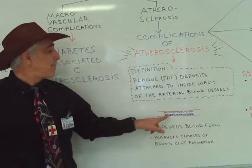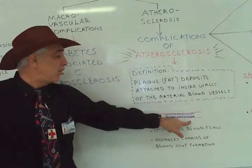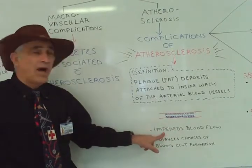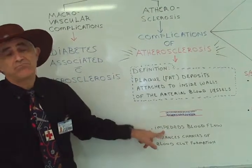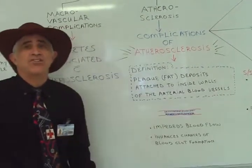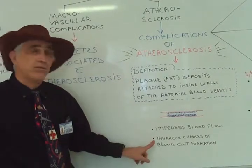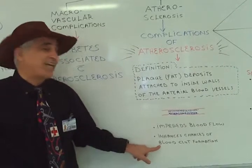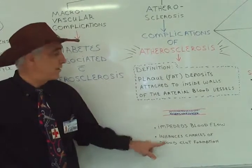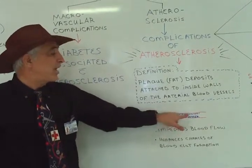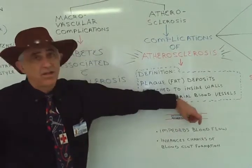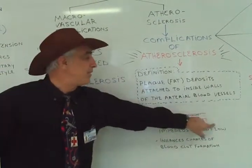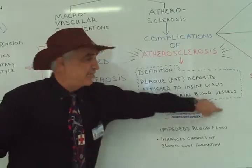Two important problems that occur as a result of atherosclerosis are: one, impeded blood flow — the blood is not making it the way it should; and two, atherosclerosis enhances the chances of a blood clot forming. With impeded flow or a blood clot, there is no flow at all — certain death to the end organ.